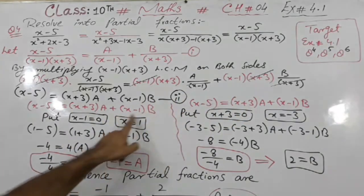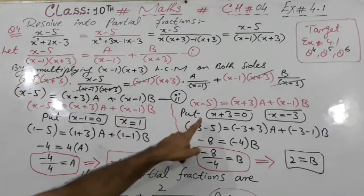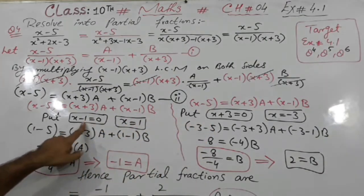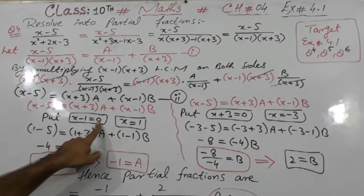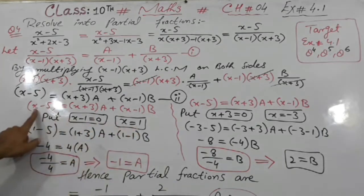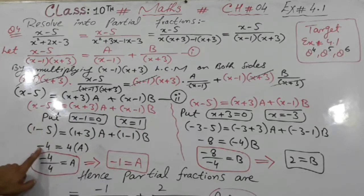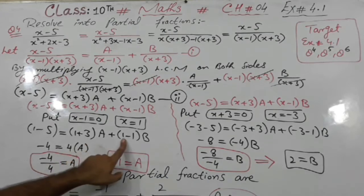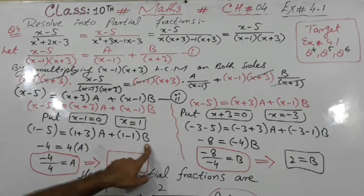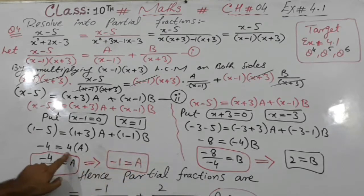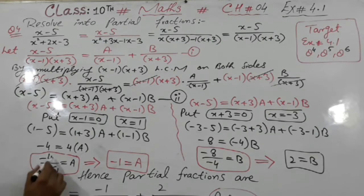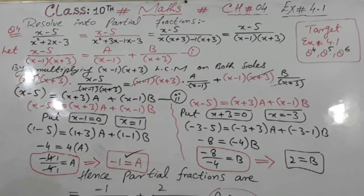Now equation number 2 we need to write two times. First value: put x minus 1 equal to 0, so x equals 1. Wherever x appears, we put 1: this gives minus 4, and 3 plus 1 gives 4, into A. The B term becomes 0, so it cancels out. 4 divides here — cancellation gives 4 over 4 equals 1 — and our answer is minus 1. So the value of A is minus 1.